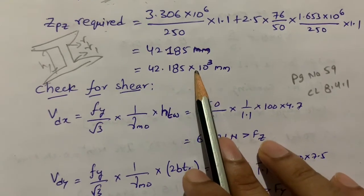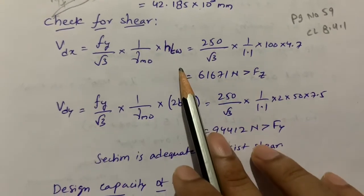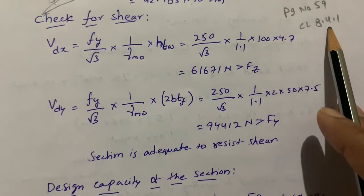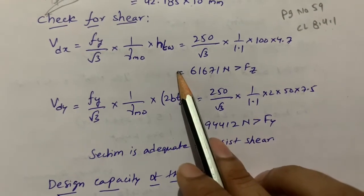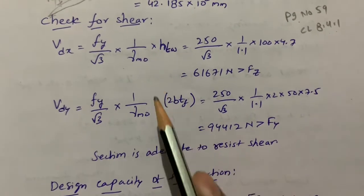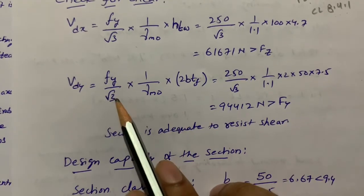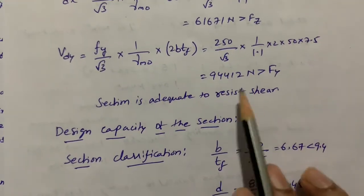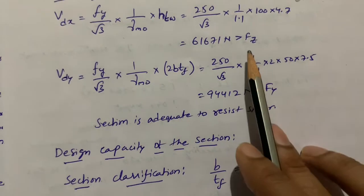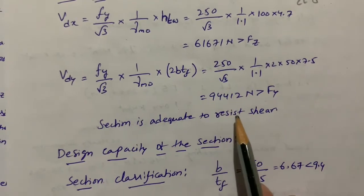After getting the plastic section modulus, we check for shear for the ISMC section. Shear strength is found by referring to IS 800 page 59, clause 8.4.1. We check shear strength in both x-axis and y-axis. The calculated force Fy is greater than Fz from the previous step, hence this ISMC section resists shear.